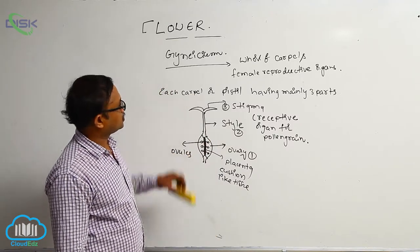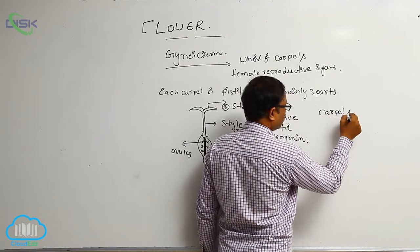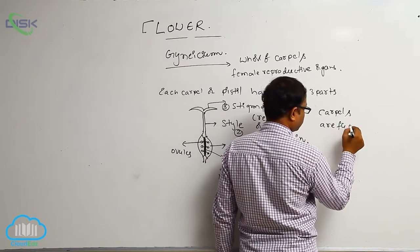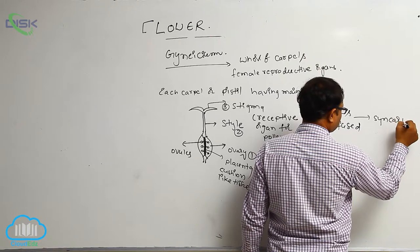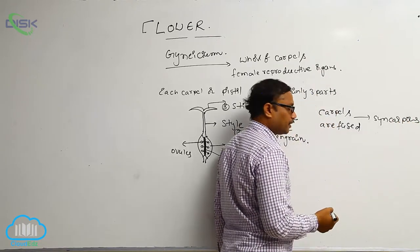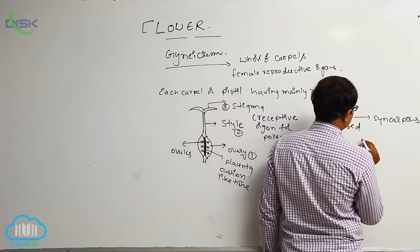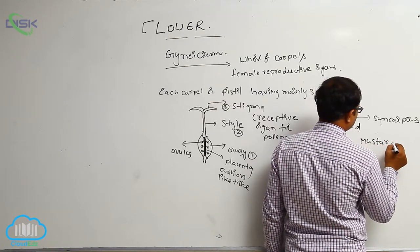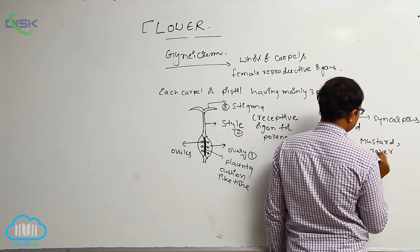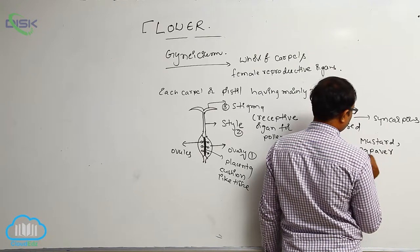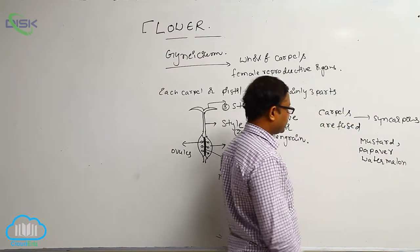Generally in some plants, carpels are in a fused condition. That is known as the syncarpous condition. Syncarpous means carpels are many and in a fused condition. Most flowers are in syncarpous condition. For example, mustard, Papaver (which means opium), and Vadramilan are syncarpous.